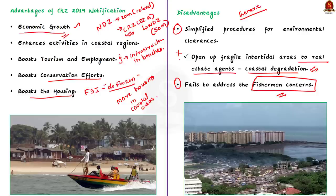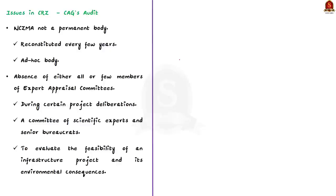Now let us see specific issues in the CRZ Notification 2019 highlighted in the news article. First, the environment ministry had notified the National Coastal Zone Management Authority as a permanent body, but it has been reconstituted every few years. In the absence of a defined membership, it is functioning as an ad hoc body. This is a fault in the implementation stage.